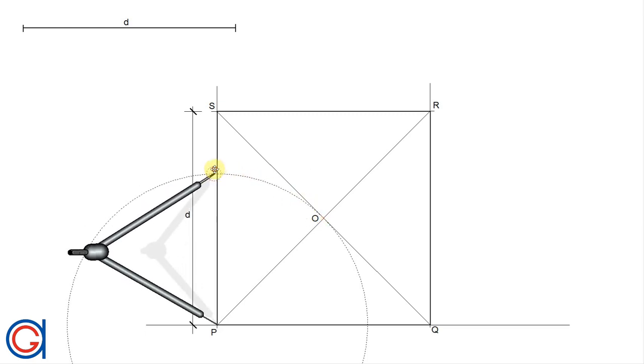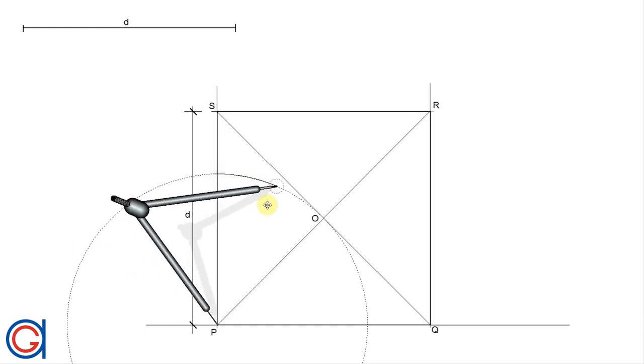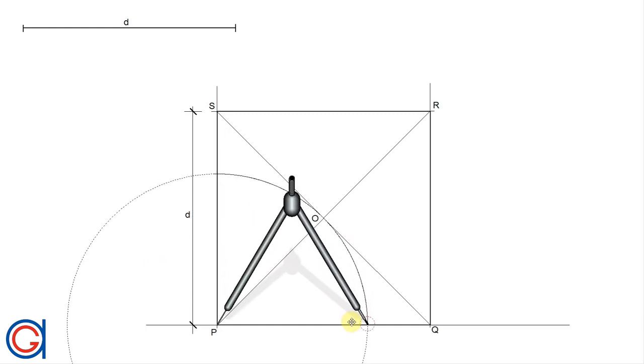So now, setting our compass on the vertex P and with a radius PO, we scribe an arc, cutting the horizontal and vertical sides of the square as shown here. These will be two vertices of our octagon.